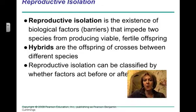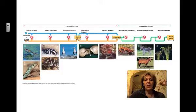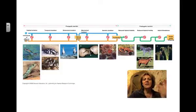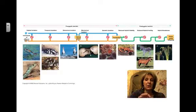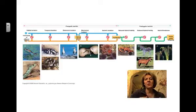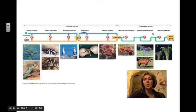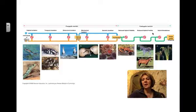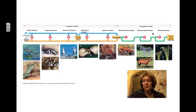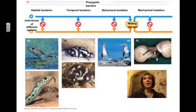A hybrid is an offspring of a cross between two different individuals. There are different types of reproductive barriers — this slide gives you the big overall picture. You can have pre-zygotic barriers, where a zygote is a fertilized egg, so these are any barriers that prevent the zygote from forming. And then we have post-zygotic barriers, which are types of barriers that prevent reproduction from being successful after the zygote — yes, you have an offspring that's produced, but it's not going to be very viable or fertile.